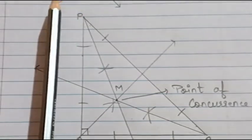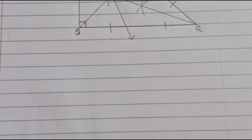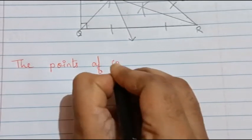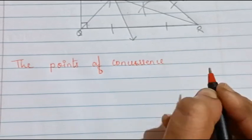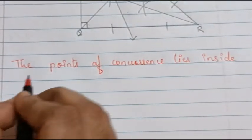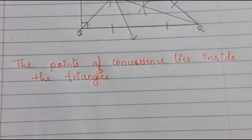So students we got the point of concurrence in the obtuse angled triangle as well as the point of concurrence in the right angled triangle. Now the third statement they have asked is: where do the points of concurrence lie? The answer is: the points of concurrence lie inside the triangle. As you all saw, the point of concurrence was inside the triangle.